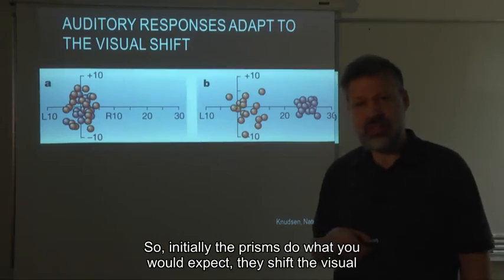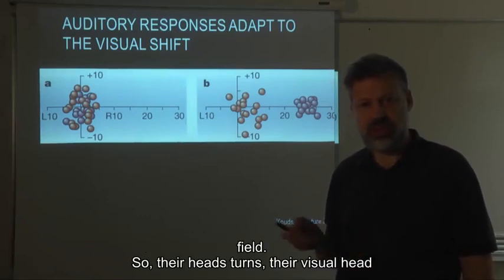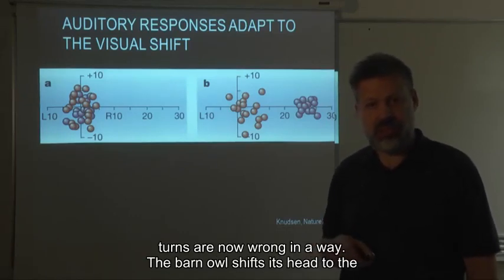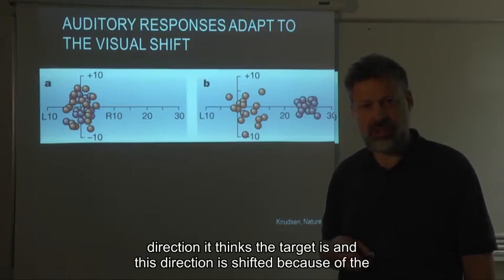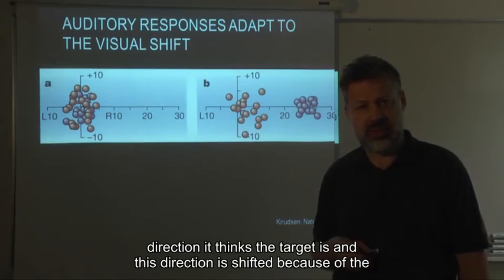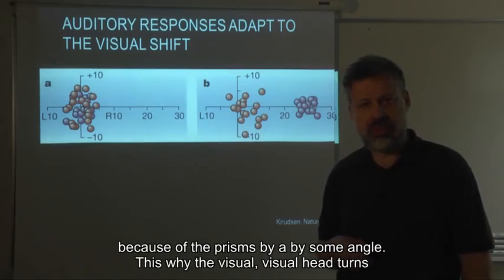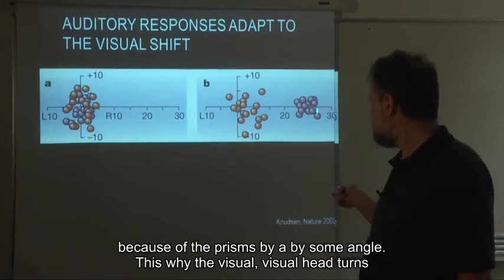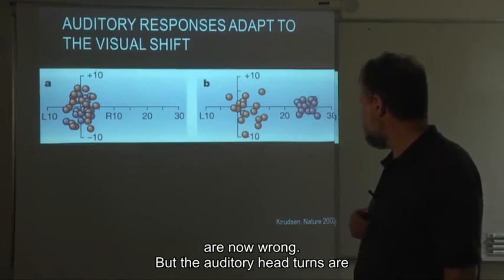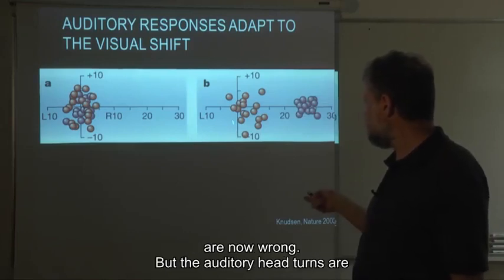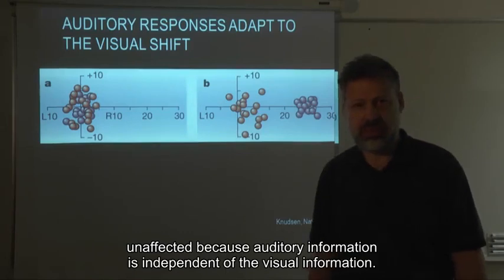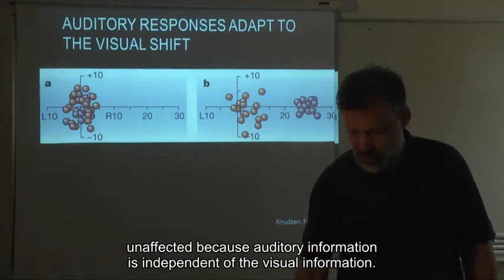Initially, the prisms do what you would expect: they shift the visual field, so the visual head turns are now wrong. This direction is shifted because of the prisms by some angle — this is why the visual head turns are now wrong. But the auditory head turns are unaffected because the auditory information is independent of the visual information.